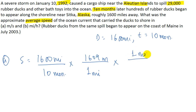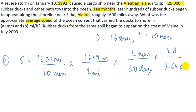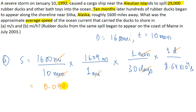In one month we have 30 days, and in one day we have 8.64 × 10⁴ seconds. The miles cancel with miles, months cancel with months, and days cancel with days, giving us the answer in meters per second. This comes out to approximately 0.099 meters per second, which is the answer for part a.